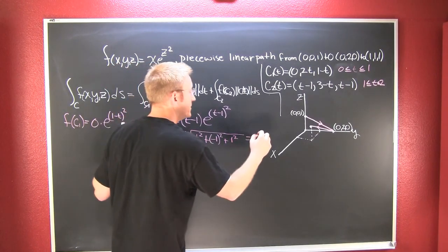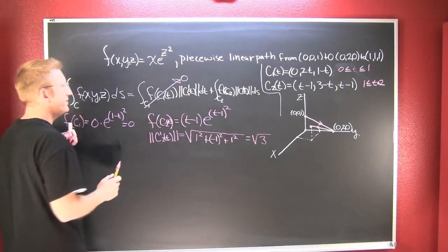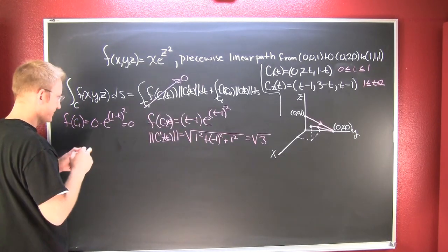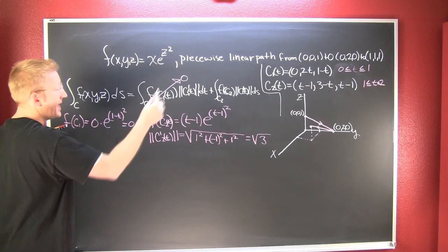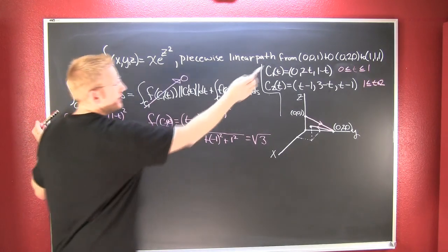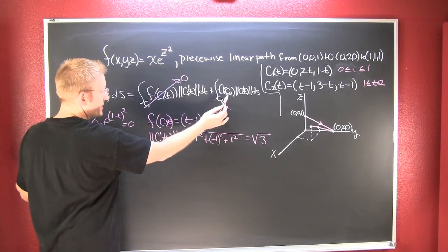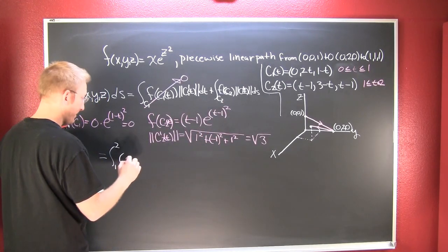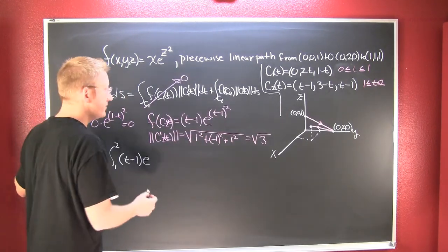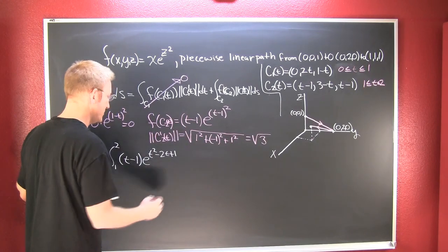So because this integral evaluates to 0, because that function was 0, we need only now look at the second path. The time it takes on the second path goes from t equals 1 to 2, and then f(c2) was (t-1) e to the t²-2t+1.